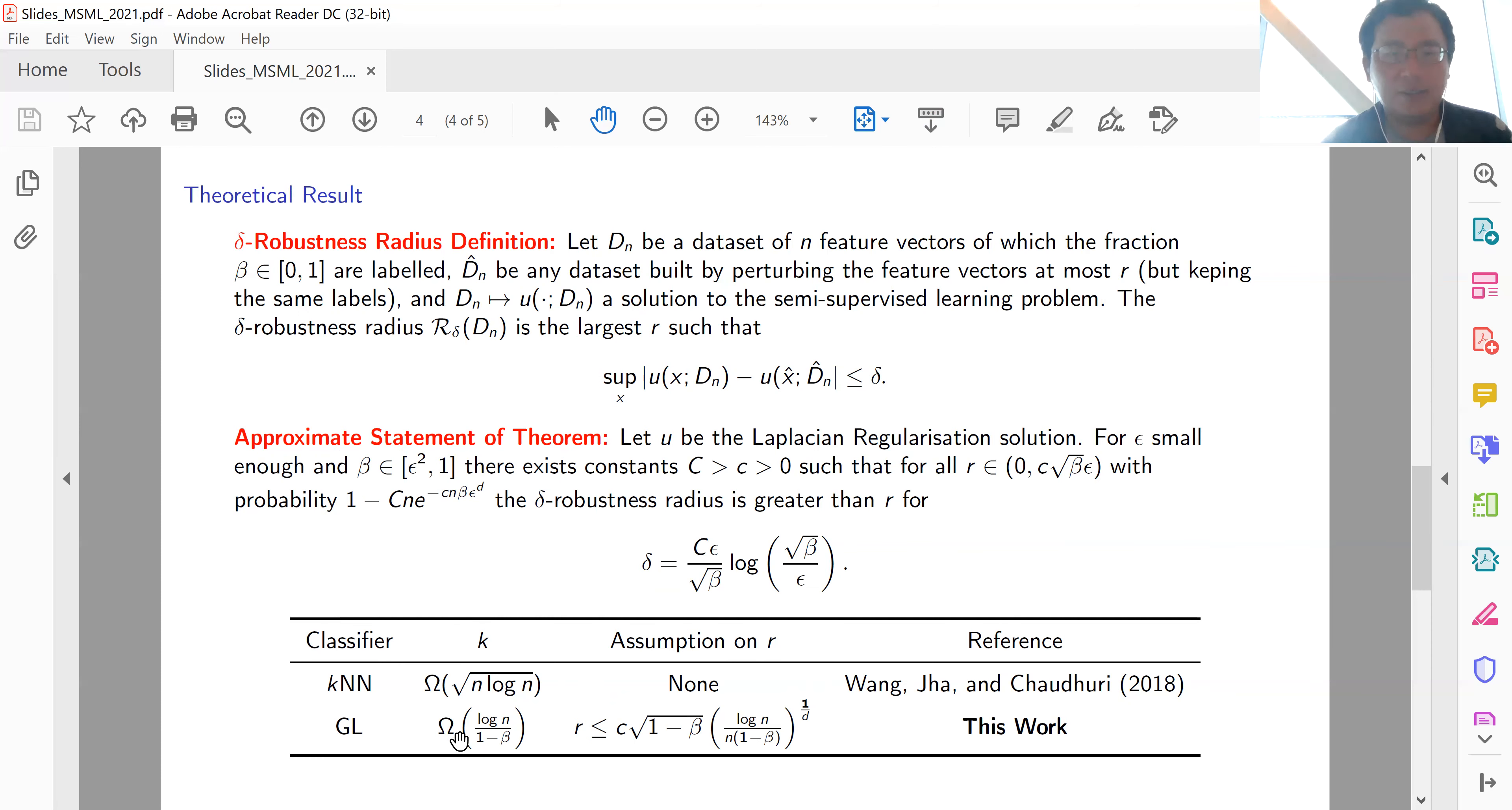For graph Laplace learning, if the number of nearest neighbors k scales as log(n), then graph Laplace learning is robust if the perturbation δ is less than or equal to r, where r is upper bounded by a constant depending on ε and other parameters.